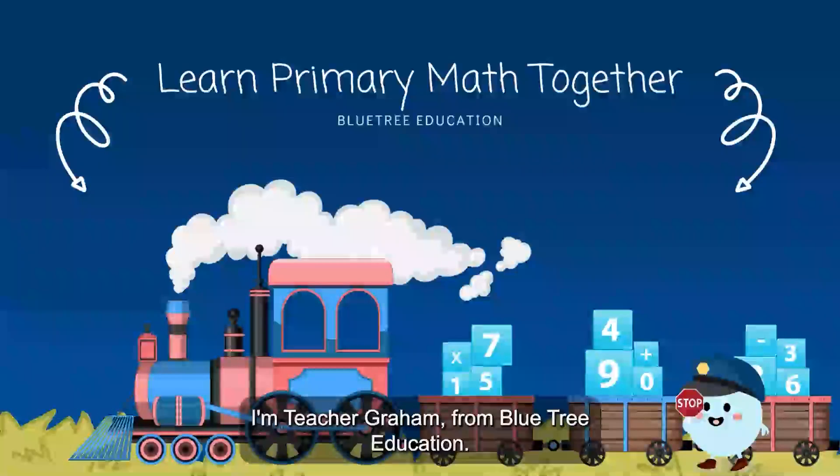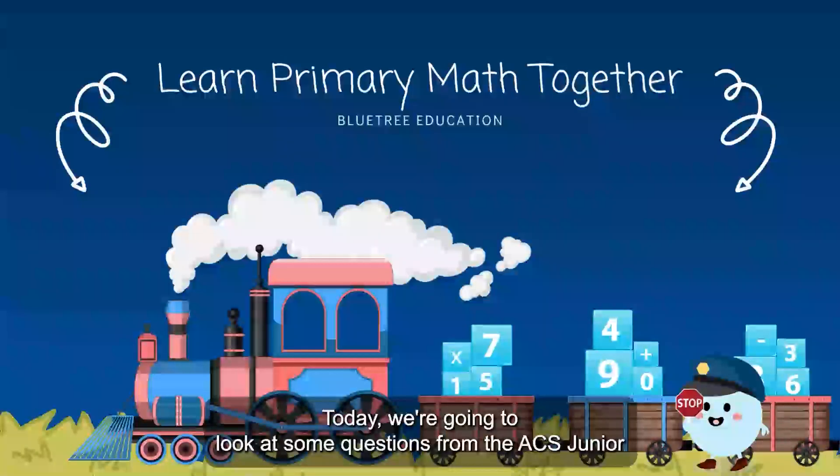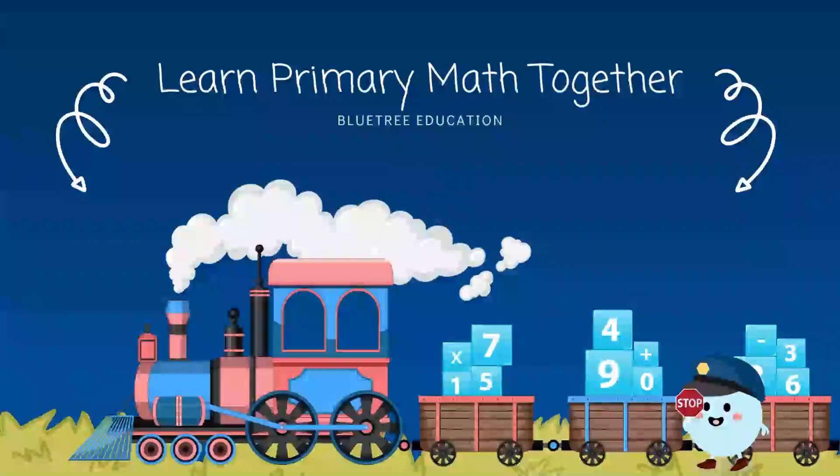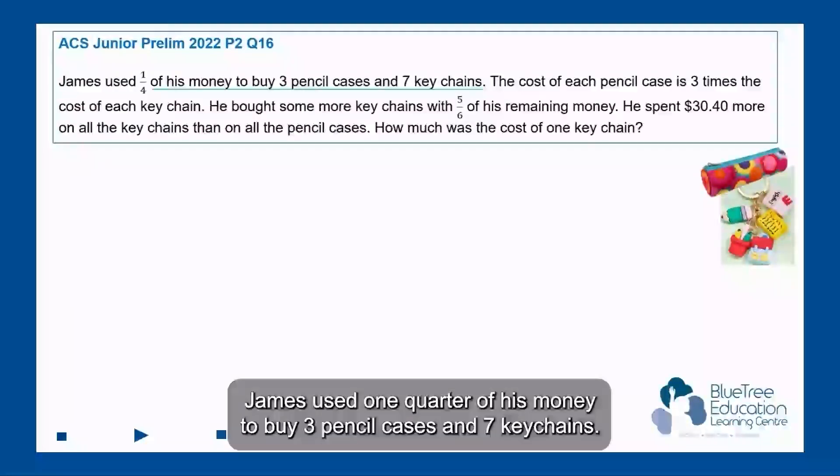Hello students, I'm Teacher Graham from Blue Tree Education. Today we're going to look at some questions from the ACS Junior Preliminary 2022 paper. Let's go. Question 16: James used one quarter of his money to buy three pencil cases and seven keychains.